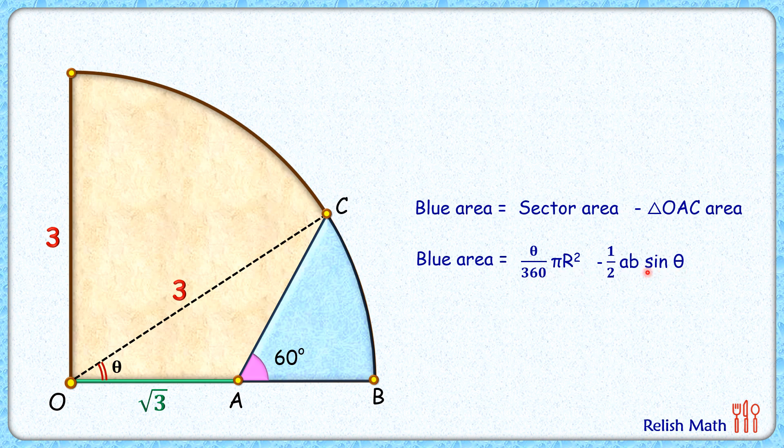So here we know everything except θ. If we can find this value of angle θ, we'll get our blue area. For that, this angle here is 180 - 60, or 120 degrees. If we can find the value of this angle, then we can get the value of θ also.